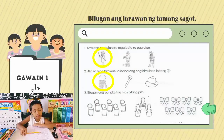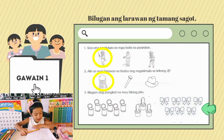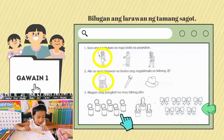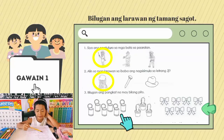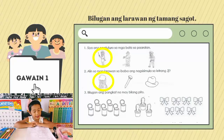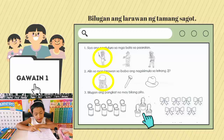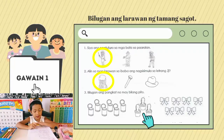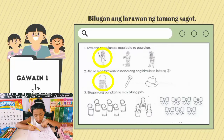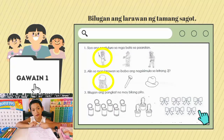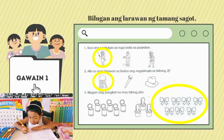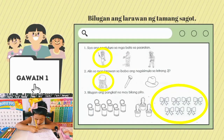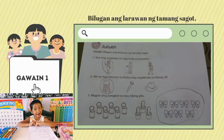Ikatlong bilang: bilugan ang pangkat na may bilang PITO. Unang larawan ay lata — bilangin natin: isa, dalawa, tatlo, apat, lima, anim. Hindi natin bibiugan, kasi anim lang. Susunod na larawan: isa, dalawa, tatlo — hindi rin, tatlo lamang. At ang huling larawan ay laso: isa, dalawa, tatlo, apat, lima, anim, pito. Pito ang laso — bilugan na natin. Tapos na tayo sa unang gawain.